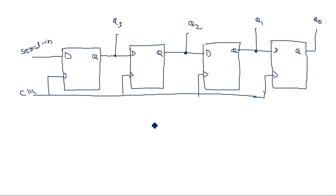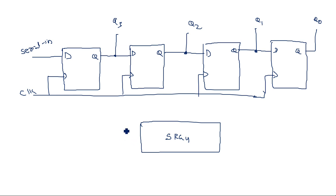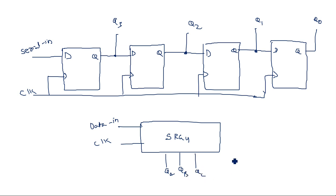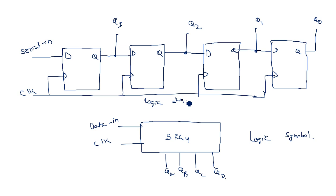In terms of IC representation, we can show a logic symbol — SRG4 for a 4-bit shift register. This has a serial data input, a clock input, and four outputs: QA, QB, QC, and QD. These are the four outputs. This is the logic symbol of this shift register. This is the logic diagram of the serial-in parallel-out shift register. Thank you.